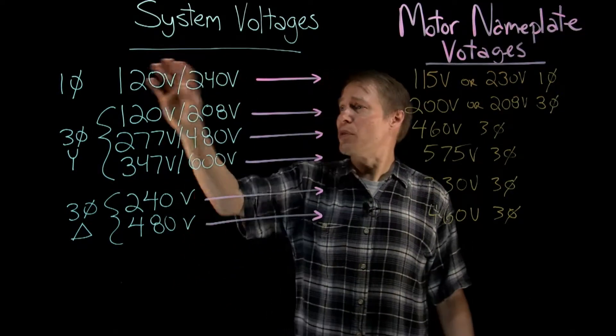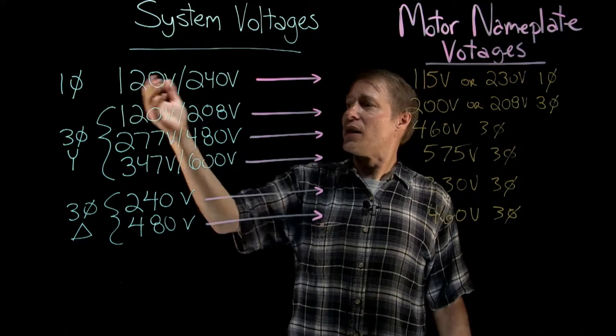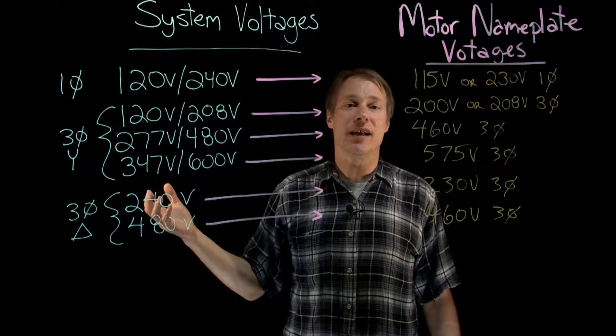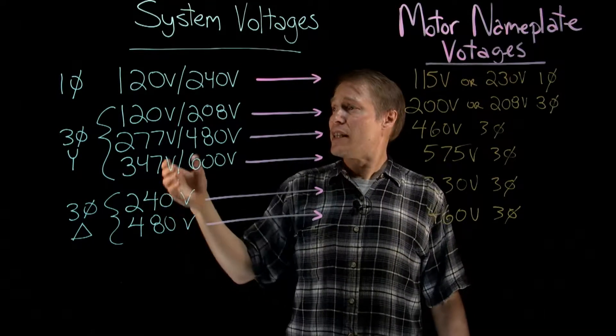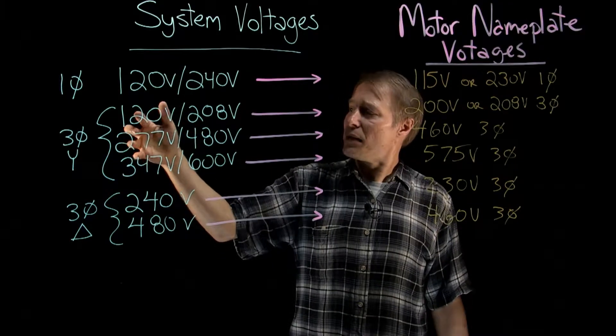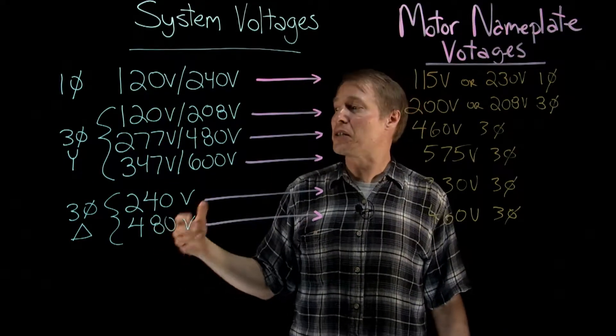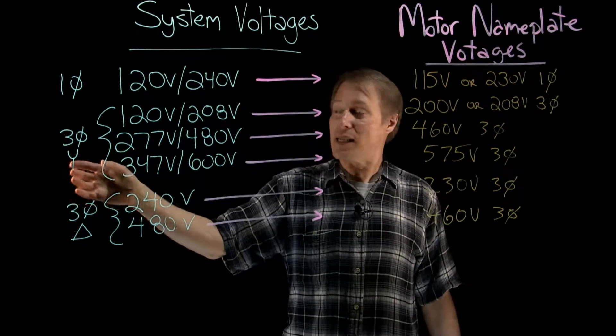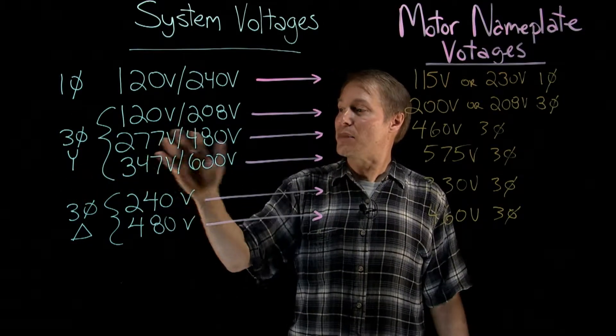For example, the top one here is a single phase 120V/240V. That's typically in a residential service, and you have access to either one of those volts. Moving on, the next three are commercial applications. They're from three phase Y systems, and they supply two voltages.